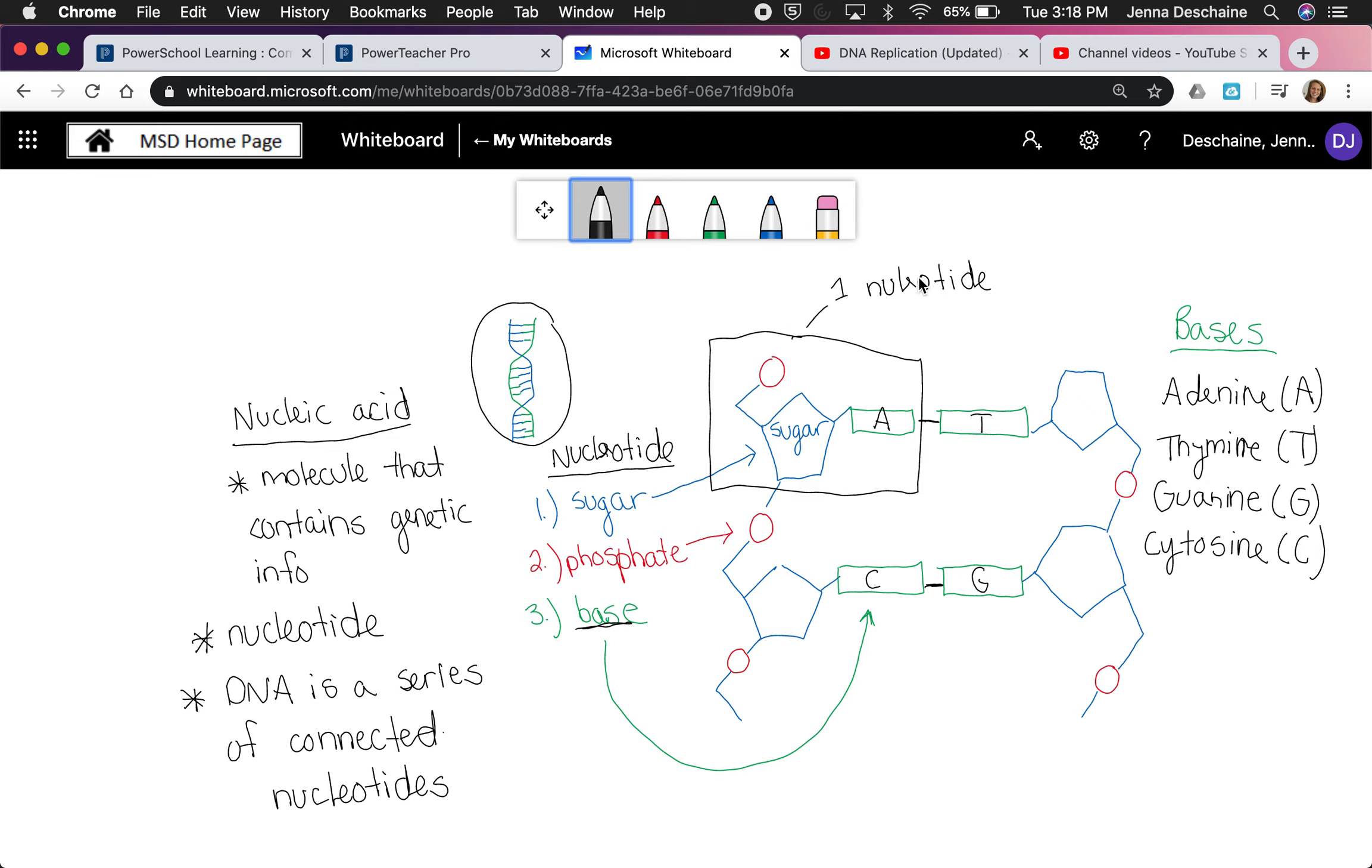So a good way to remember which bases bond with which is this little mnemonic right here. And that mnemonic is apple in the tree and car in the garage. This tells you that A will always bond to T, apple in the tree, and C will always bond with G, car in the garage. So that's just a simple little thing I would write down somewhere that can help you remember which bases bond to one another.